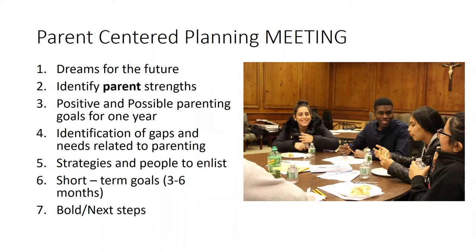Strengths don't have to be exactly related to parenting, but can be tangentially related — such as having lots of energy, which can lead to good parenting outcomes. The next step is to make positive and possible parenting goals for one year — achievable goals that build on the parent's strengths. Then the meeting identifies gaps and needs related to parenting: what does the parent with disabilities need to reach those goals? Strategies are developed and people are identified to enroll or enlist to assist the parent in making steps toward those positive and possible goals.